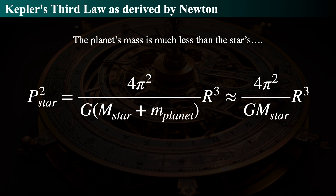First, let's assume that the planet's mass is much less than the star's — and that's a good assumption in general. The period of the star, meaning how long the spectroscopic variability takes, is equal to the sum of the masses of the star and the planet, times Newton's gravitational constant and 4π², divided by R cubed, the distance between them. Because the star is so much more massive than the planet, we can approximate the sum of the masses by just the mass of the star alone.